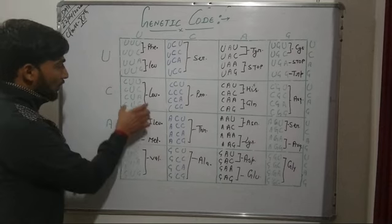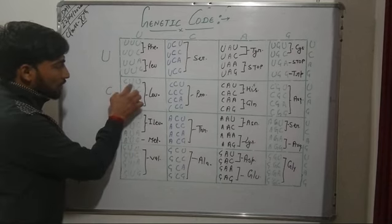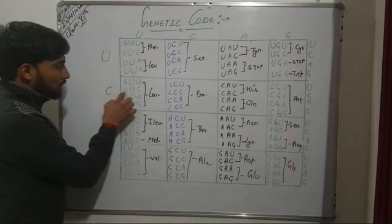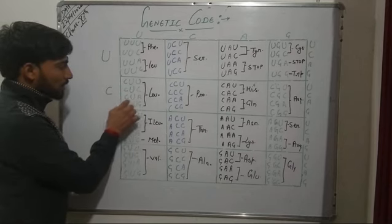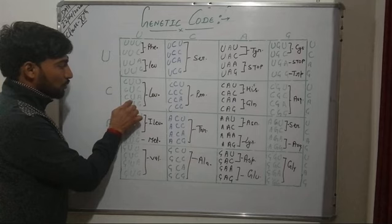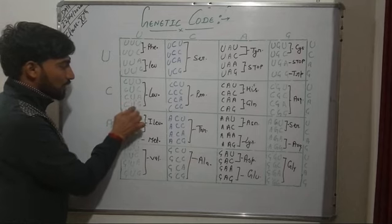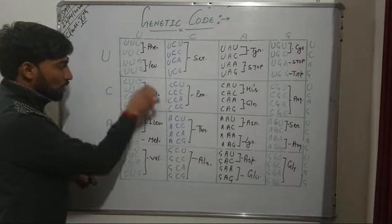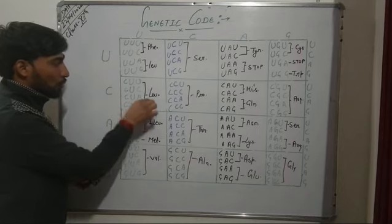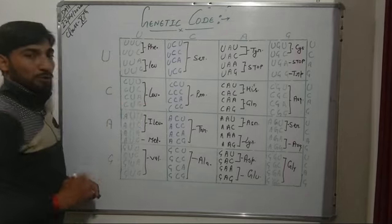Now see here: CUU, CUC, CUA, and CUG — all four call for leucine. In the next column, AUU, AUC, and AUA call for isoleucine, while AUG calls for methionine.